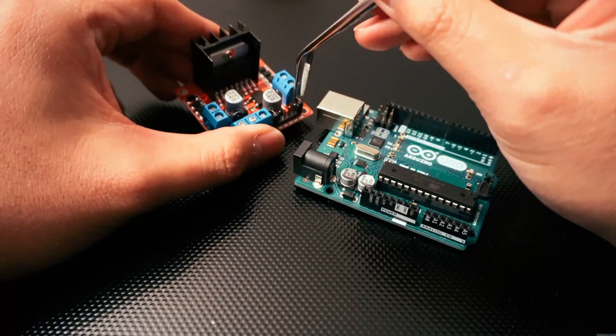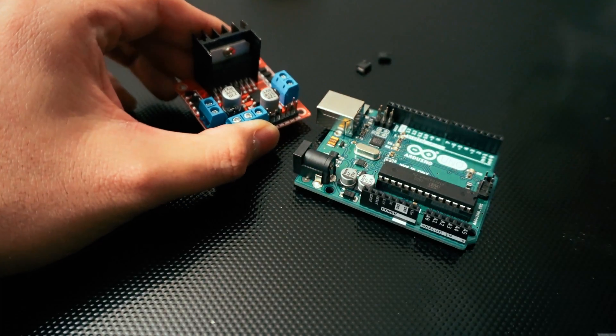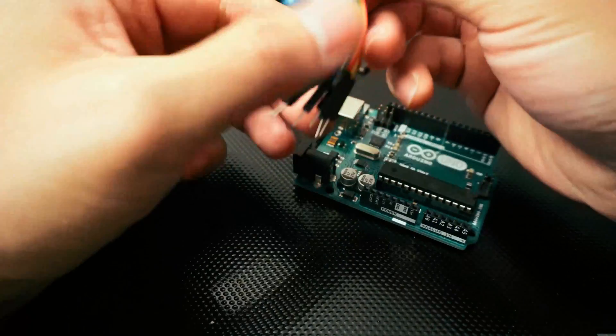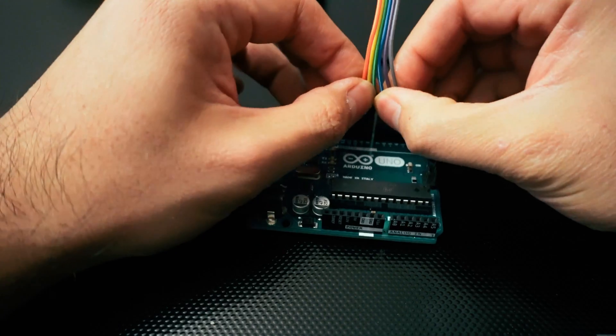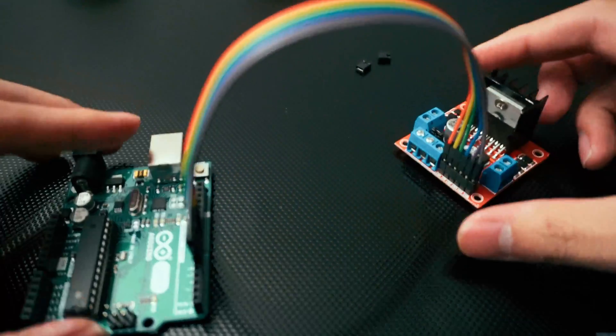To control the motor with the Arduino, we'll just connect the 6 controlling pins to Arduino digital pins. Make sure the enable A and enable B are connected to PWM pins for speed control later. Here we're connecting the 6 pins to Arduino digital pins 5 to 10.